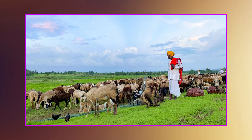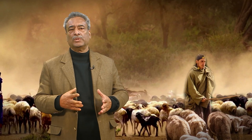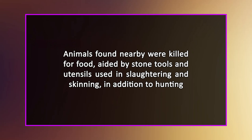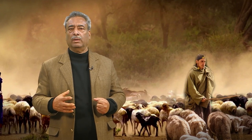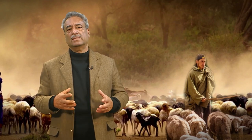The animal meat, unaffected by the vagaries of the weather, gave rise to nomadic pastoralism as a defining stage in human societies. Early evidence on human groups and their environment suggests that the animals found nearby were killed for food, aided by stone tools and utensils used in slaughtering and skinning. In addition to hunting, when the animal population in an area became exhausted, the group was forced to relocate to a location where there was an adequate quantity of animals.